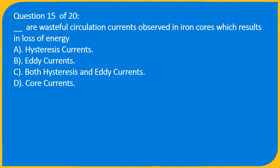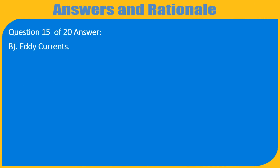Question 15 of 20: Wasteful circulation currents observed in iron cores which result in loss of energy are called: A. Hysteresis currents, B. Eddy currents, C. Both hysteresis and eddy currents, D. Core currents. Answer: B. Eddy currents.